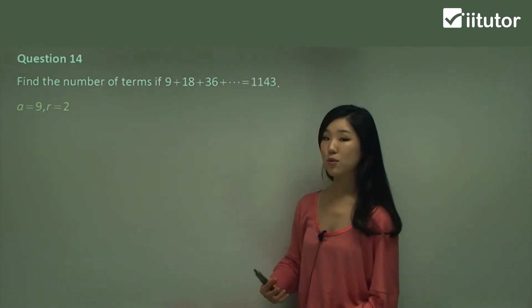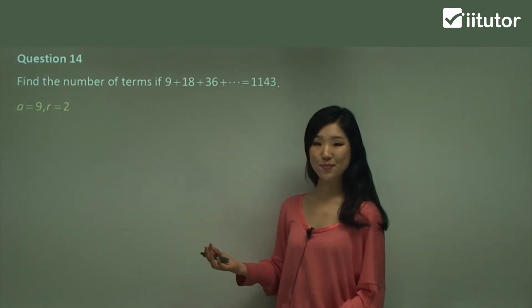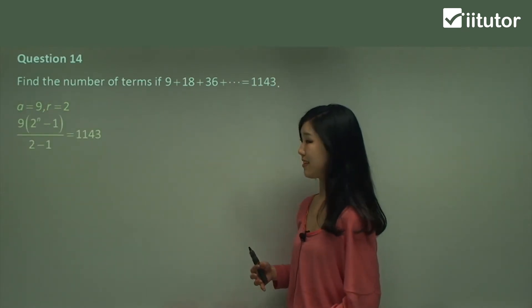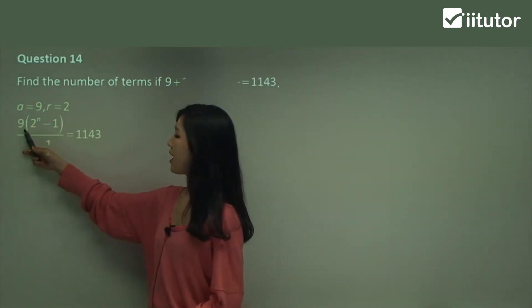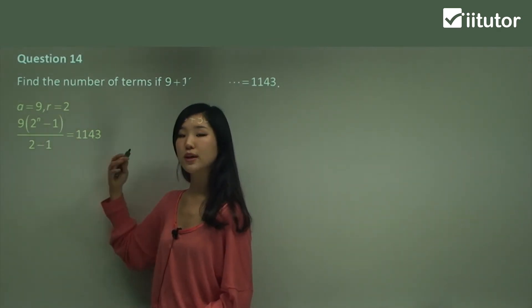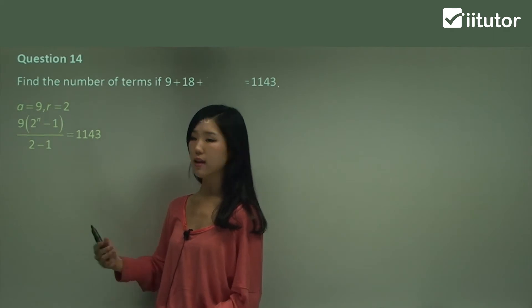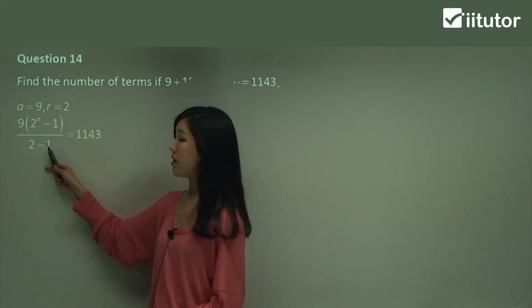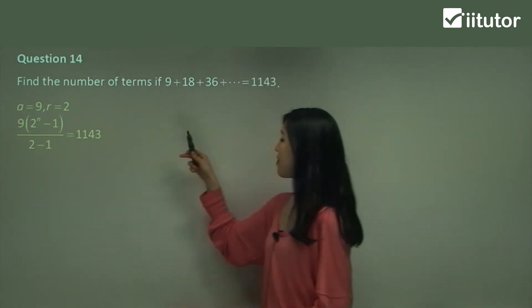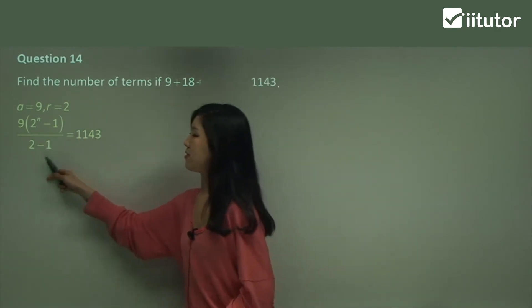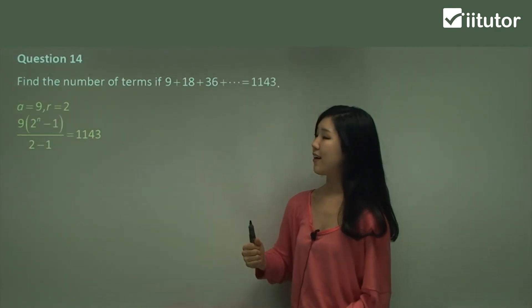So we know what a is. We know what r is. We don't know what n is. That's what we're going to find, because it says find the number of terms. So what I'm going to do, put all these values into our sum formula, just like this. So a which is 9 times r which is 2. So 2 to the power of n. We're going to put it in terms of n because we need to solve for n. It's going to be 2 to the power of n minus 1 over r minus 1. r is 2, so 2 minus 1. And this whole thing equals to 1143 because this is the sum and they give us what the sum is.